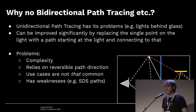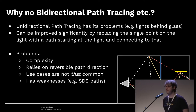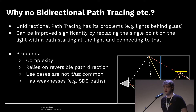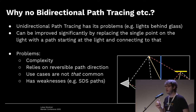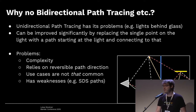Also, the use cases for bidirectional path tracing aren't that common — mostly it doesn't provide a benefit, adding a lot of complexity for little gain. Furthermore, bidirectional path tracing can't handle SDS paths, such as caustics in a pool where light refracts through water, hits the diffuse bottom, and exits again. For this reason, Cycles sticks with unidirectional path tracing. It might change in the future, but it's definitely not something you would just add in an afternoon.